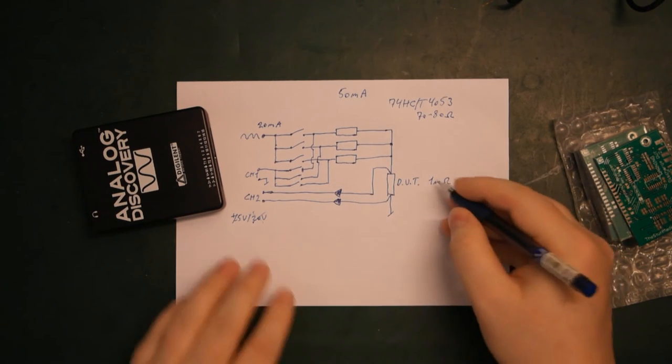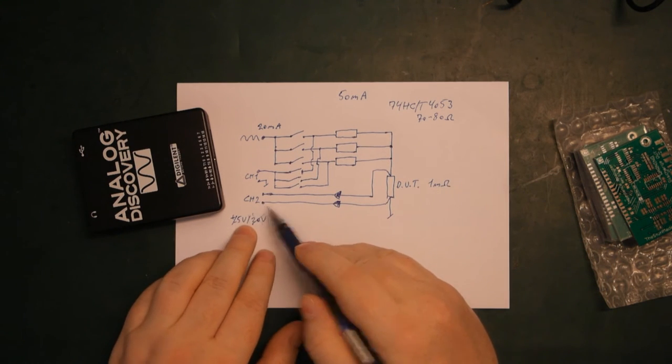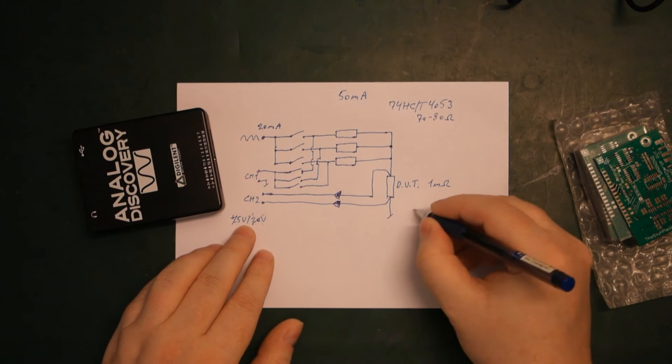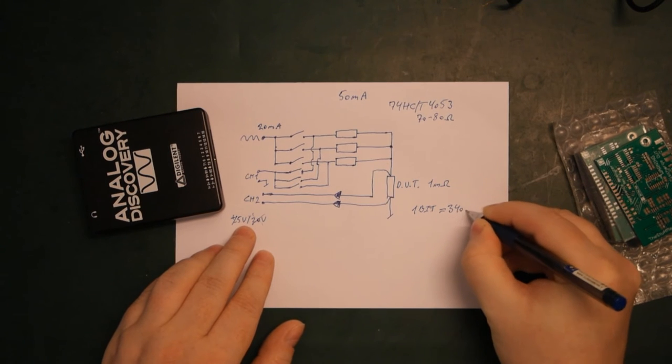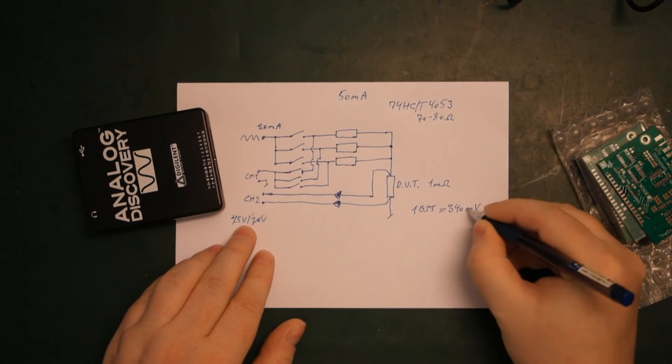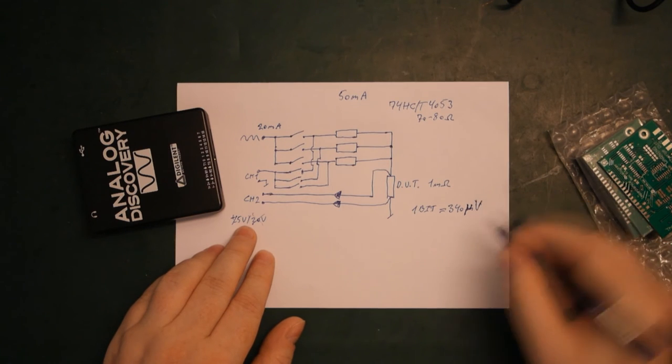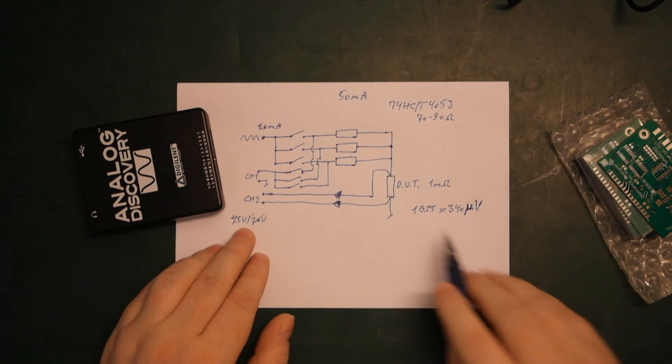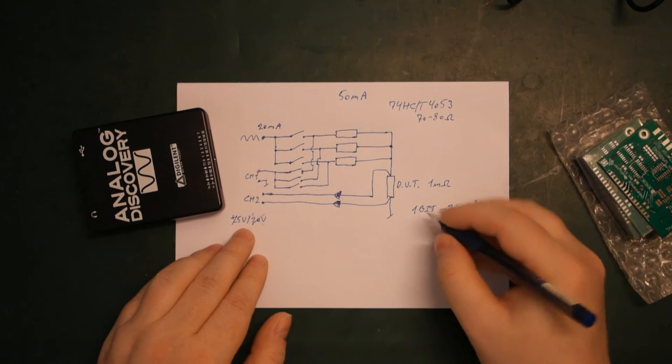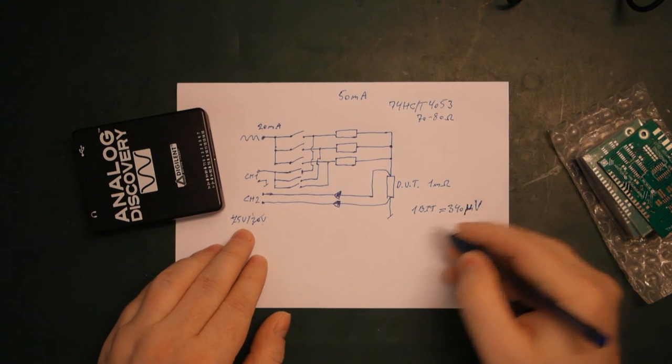So originally, one bit here on the 5-volt range is about 340 micro-volt. So 340 micro-volt. So experimenting a bit with 20 milliamp maximum output current...